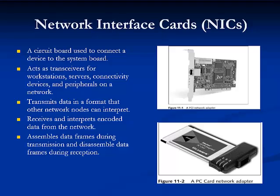You are already familiar with functions that occur at the physical layer. The devices that manage these functions are called Network Interface Cards, or NICs. NICs enable workstations and other nodes to connect to a network. They come in many different types and form factors depending on the network access method, transmission speed, and computer interface. Because NICs perform signaling and data framing, they belong to the physical and data link layers of the OSI model.